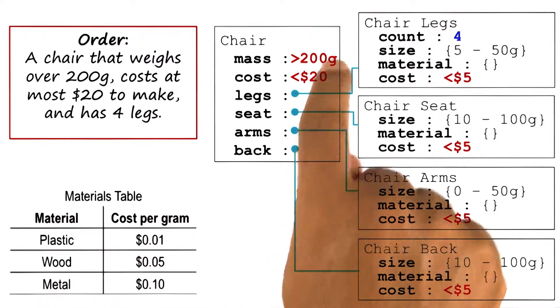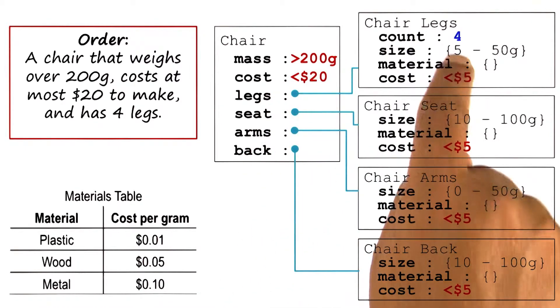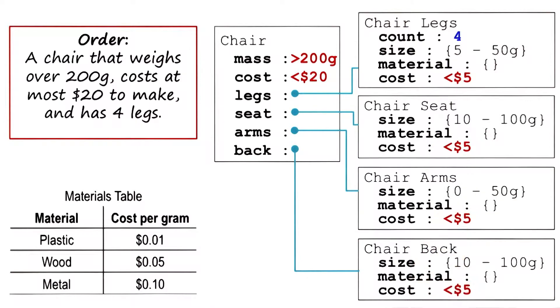In this case, the cost plan distributes this cost of $20 between the four components and assigns less than five dollars for each one of them.